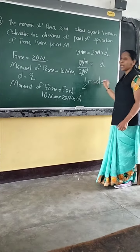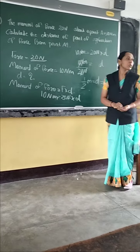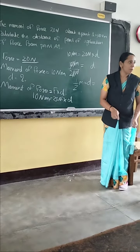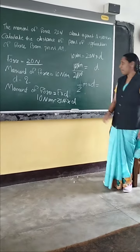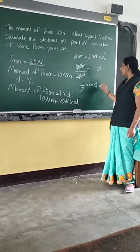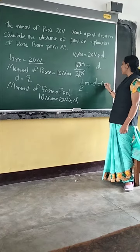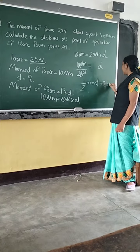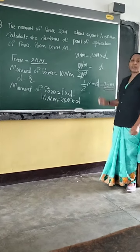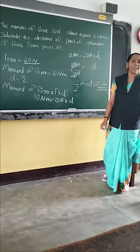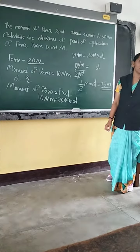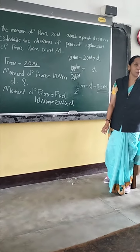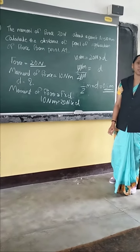So distance equal to 1 by 2 meter. What is 1 by 2? It is 0.5. So distance equal to 0.5 meter. The unit of distance is meter. Clear everyone?